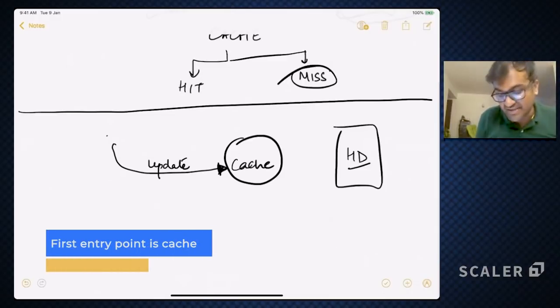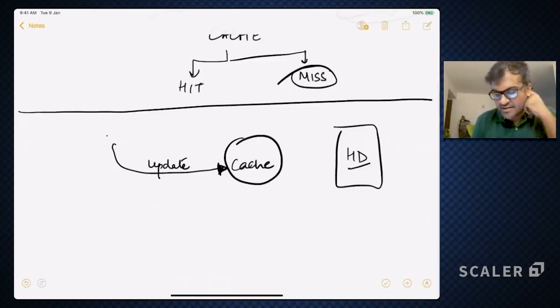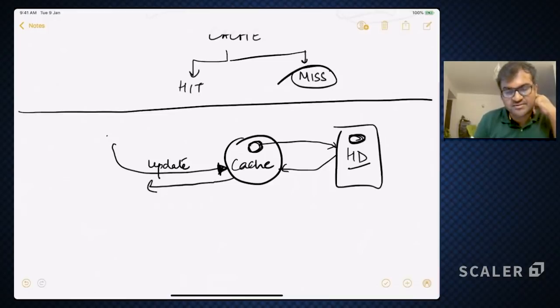So first I check, is this entry present in the cache? Is my profile cached? If it is cached, then I first update the entry in the cache and then I update the entry in the hard disk. And only when both of them have been updated, only then I return success. This is called write-through cache.